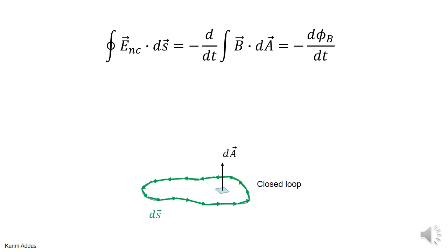We're going to solve a problem that involves using the Faraday-Maxwell equation, where we take the form where the derivative with respect to time is taken outside, so that we're getting the rate of change of the magnetic flux. Remember that for this equation to be meaningful, you have to give a relationship between ds (the elements of length around the closed contour) and the element of area dA, and they're related by the right-hand rule. If you put your fingers in the direction of ds, then the area vector points in the direction of the thumb.